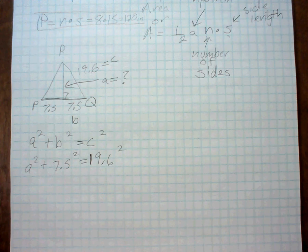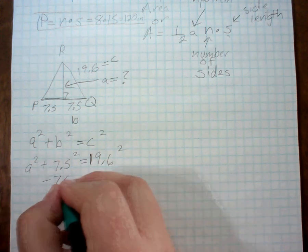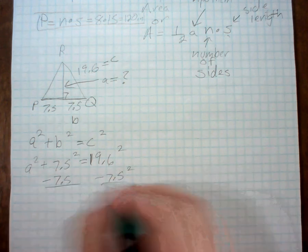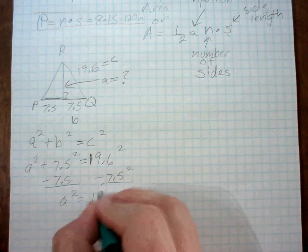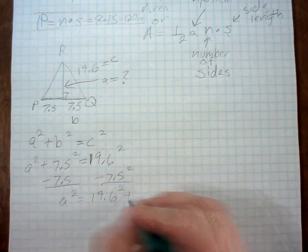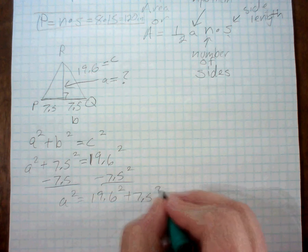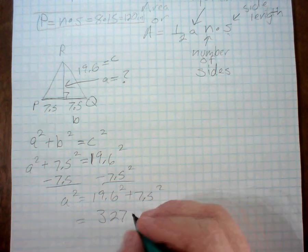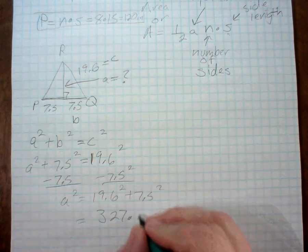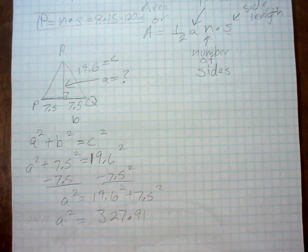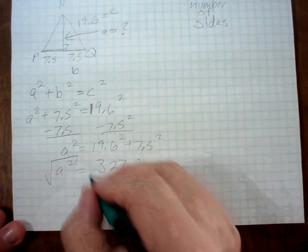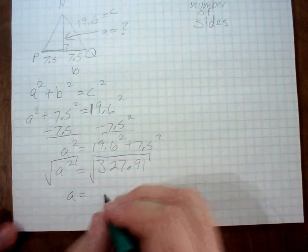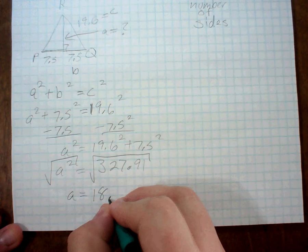Now what I can do is I'm going to subtract 7.5 squared from both sides. So then I get A squared is equal to 19.6 squared plus 7.5 squared. Now if I plug that in the calculator, I get about 327.91, roughly. And that's the A squared. So what I need to do is take the square root of both sides, and I get A is equal to approximately 18.108.